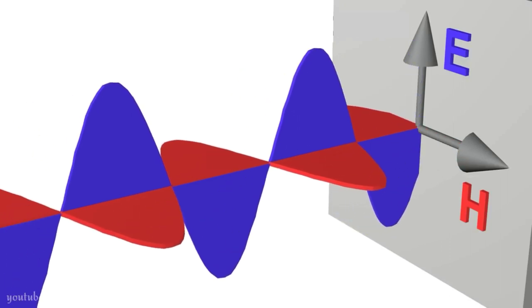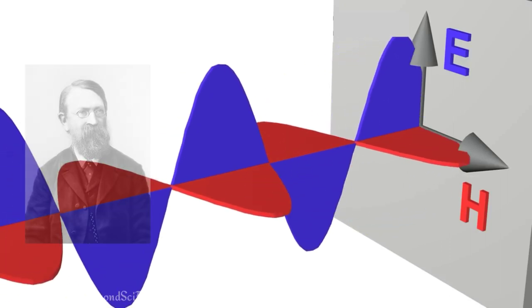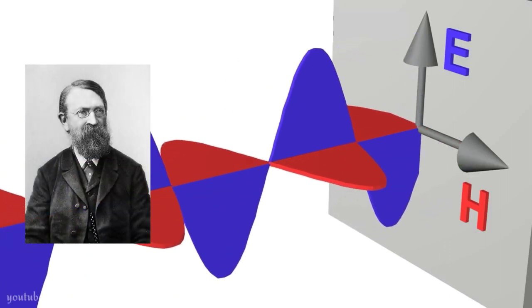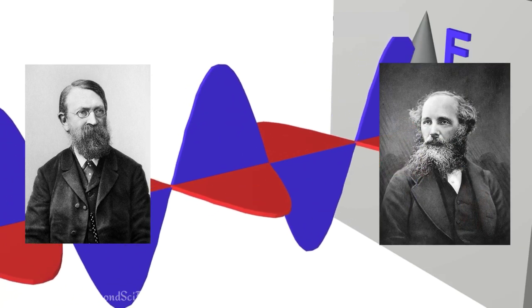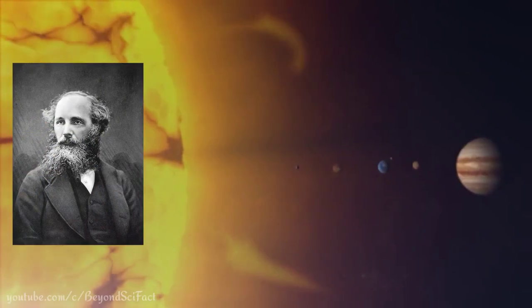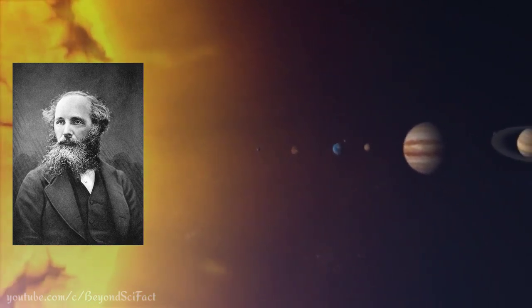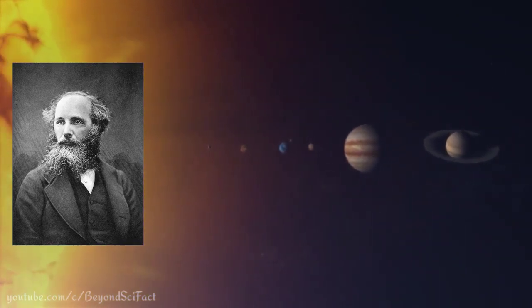However, the immediate cause for the overthrow of Newtonian physics was not Mach's criticism. The difficulty lay with Maxwell's electromagnetic theory. His theory predicted that electromagnetic disturbance in empty space would propagate at the speed of light, but there were some conceptual difficulties.